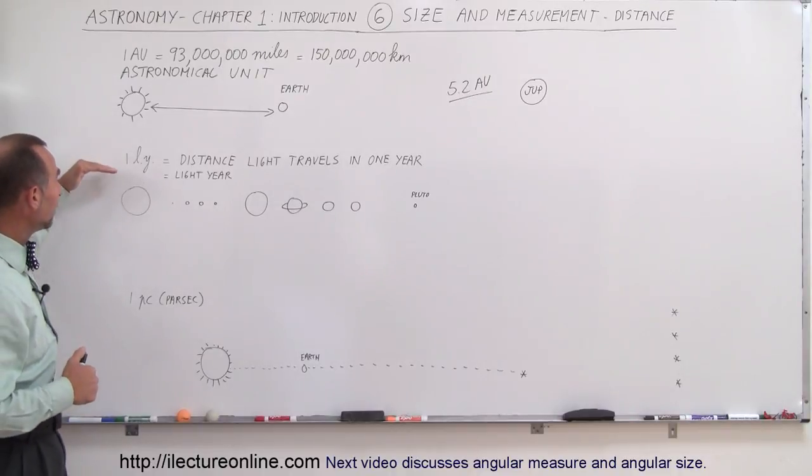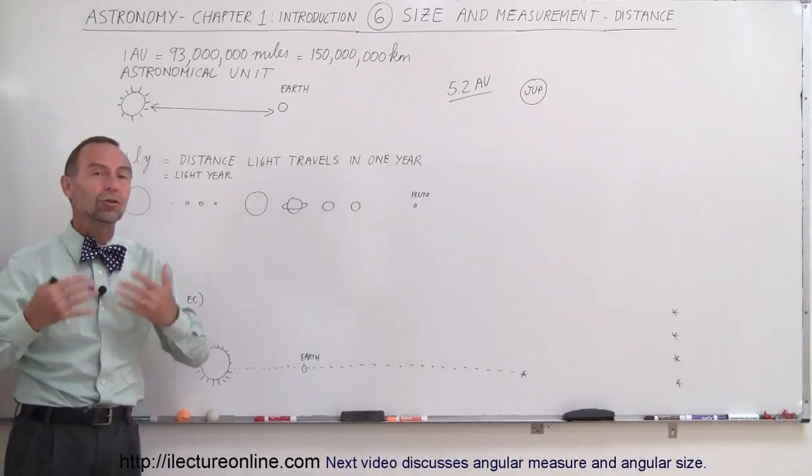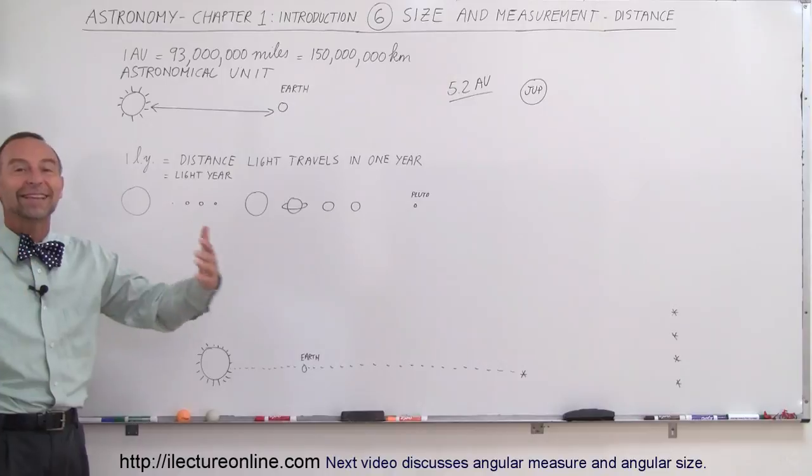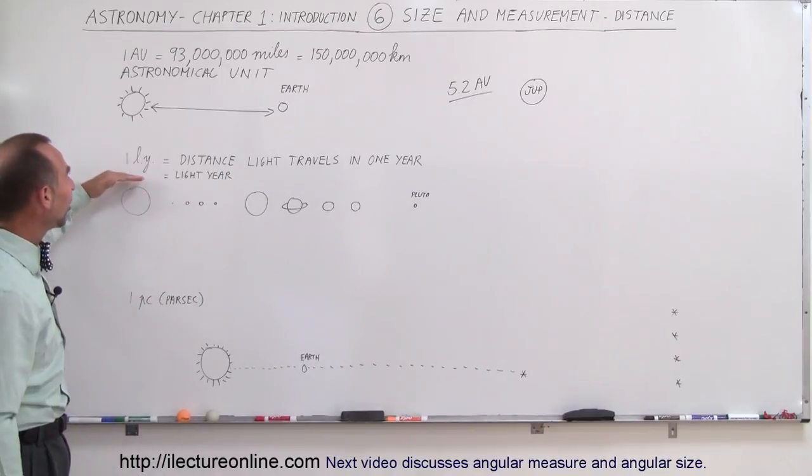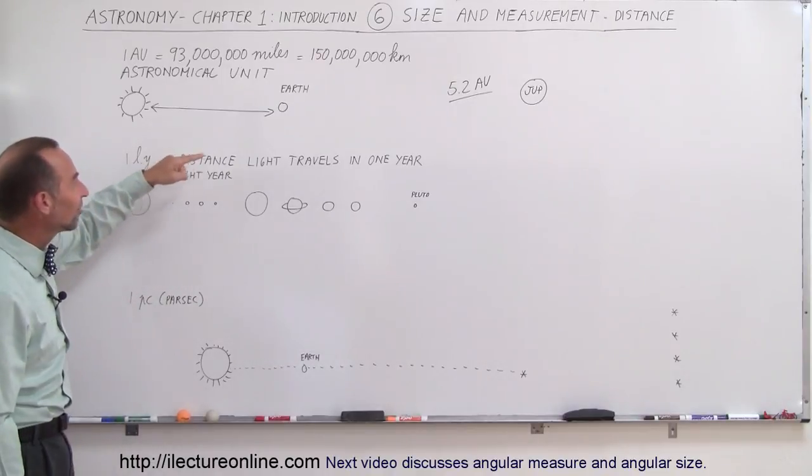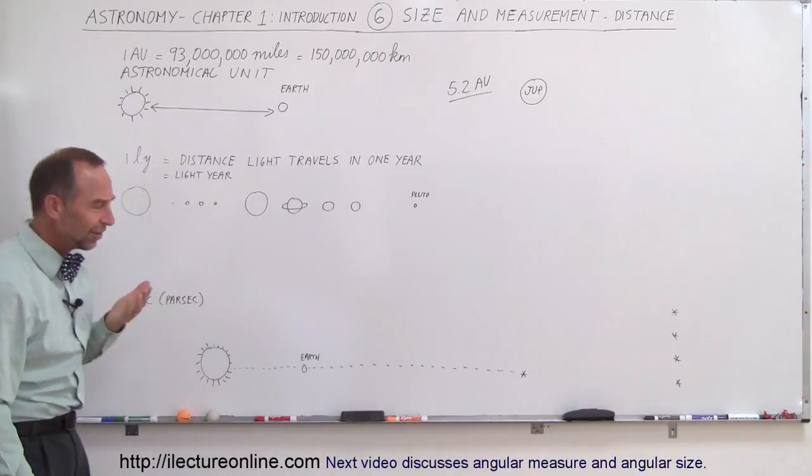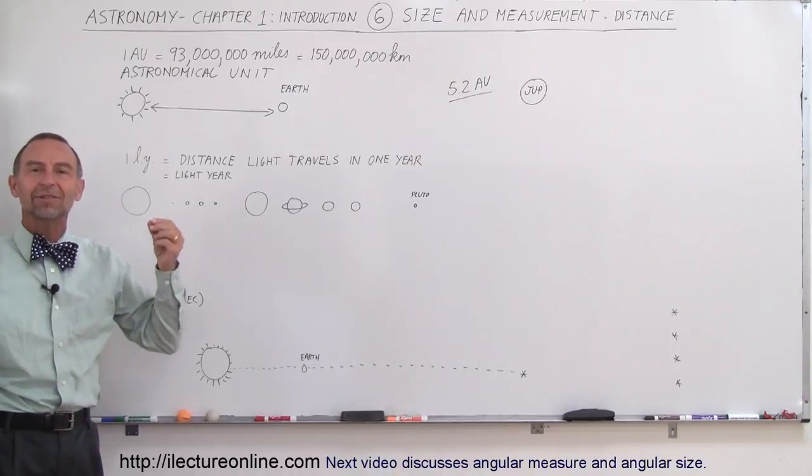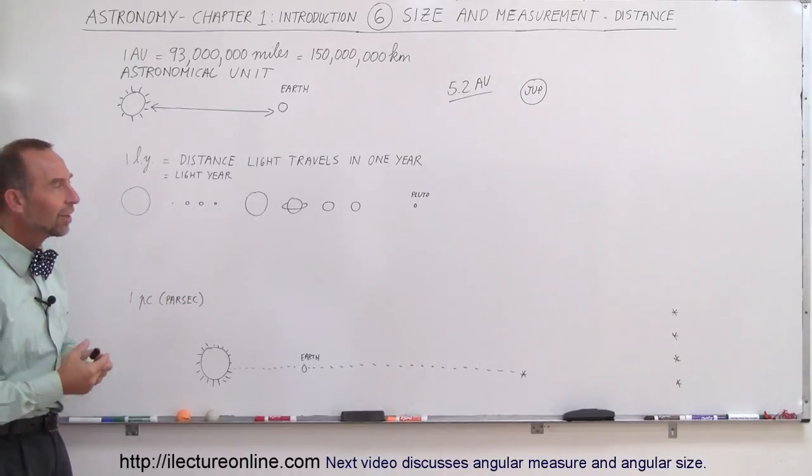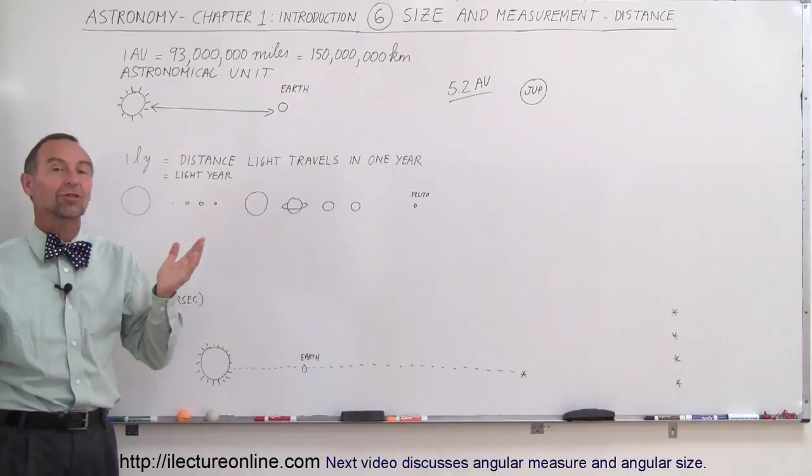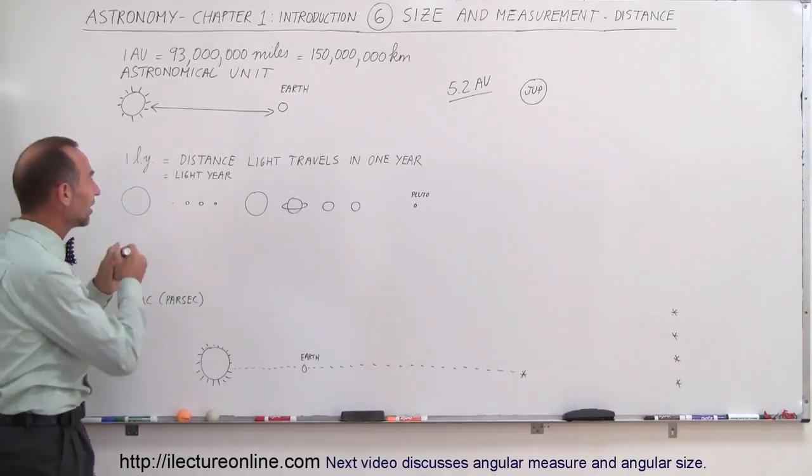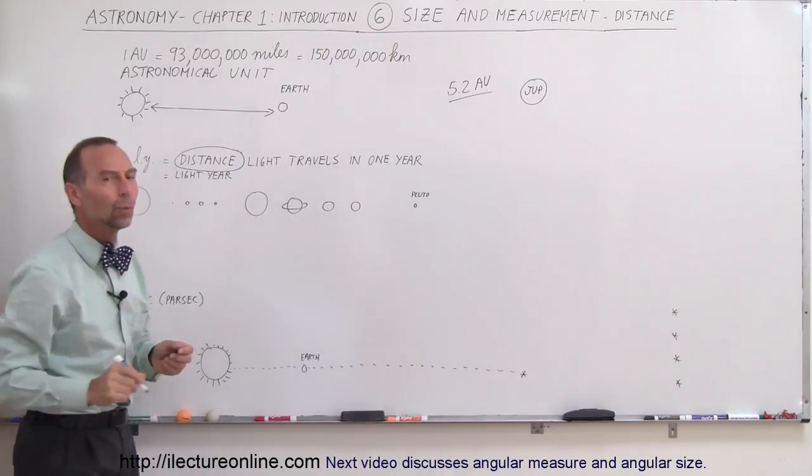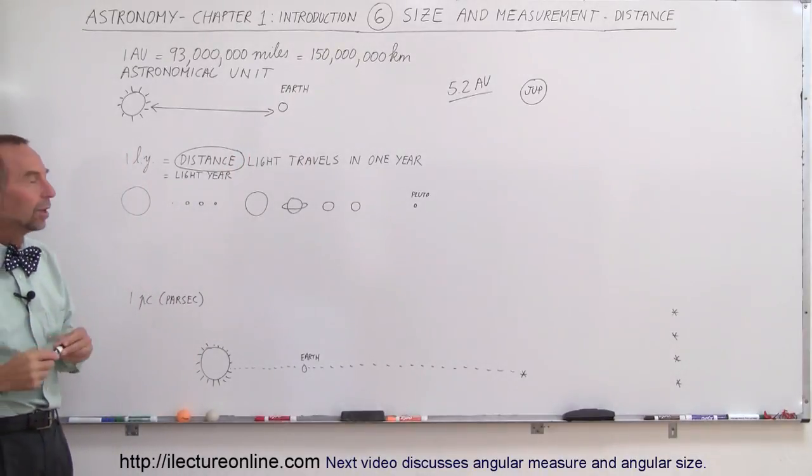The next measurement that we use, and this is probably the most commonly used for measuring things throughout the universe, is called the light year. It's the distance light travels in one year. Now the name is a little bit odd because when you think about the term light year, you think about time. A year is a unit of time, but yet a light year is actually a unit of distance. It's the distance light travels in one year.